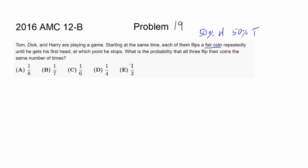So you get a coin, you flip it. If you get a head, you stop. If you get a tail, you flip it again. If you get a head, you stop. If you get a tail, you flip it again, until you get a head and you stop.